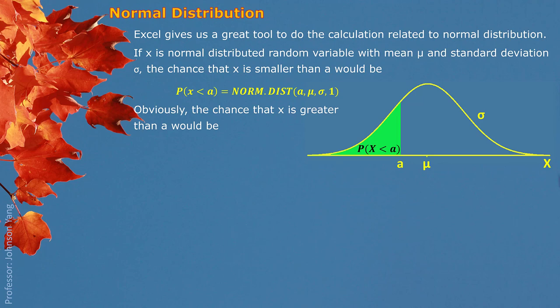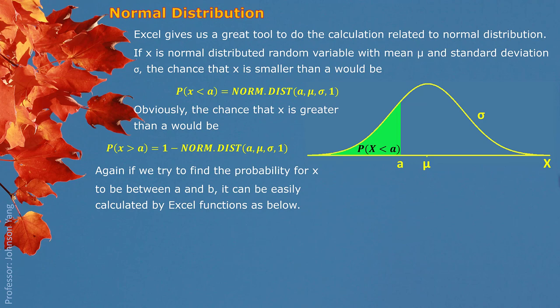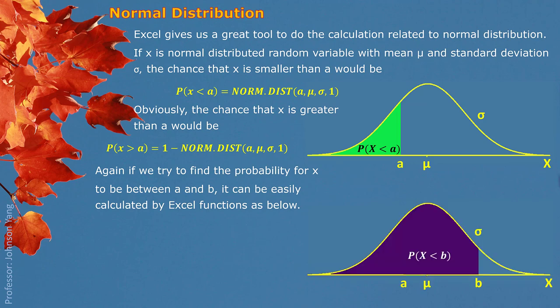From this function, we can also figure out the other side: how much chance X is greater than A. We use one minus this value to get the other part. If we try to find the probability for X to be between A and B, we know the green area cut off from A on the left side and the purple area cut off from B on the left side — both easily found using this Excel function. The area between A and B is the difference of these two, so we use the Excel function and do the subtraction to get the answer.